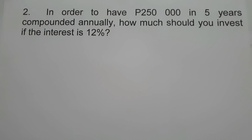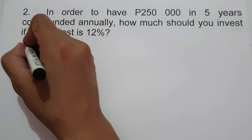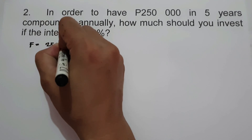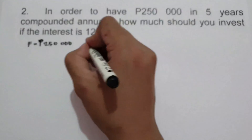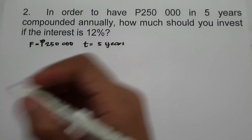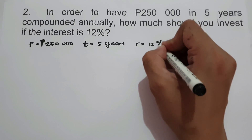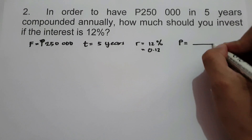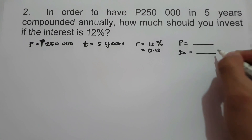On example number two: in order to have 250,000 in five years compounded annually, how much should you invest if the interest is 12%? To find the principal, let us determine first the given. We have 250,000 as our future value, time is 5 years, and the rate is 12% or 0.12. We are looking for the principal, and let us also include the compound interest.